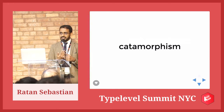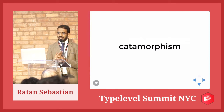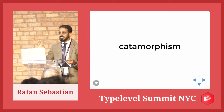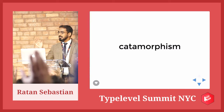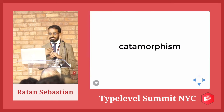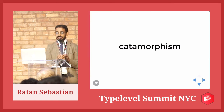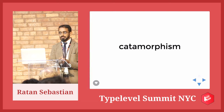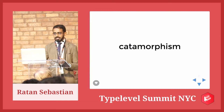Let's start with catamorphism — 'cata' meaning downward in Greek. It's more commonly known as a fold. Hands up if you're familiar with the fold-right or fold-left constructs in lists in Scala. This is one of the more common recursion schemes. We're starting with this so that we get an idea of the advantages of using fold over direct recursion.